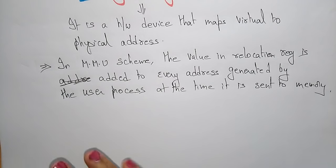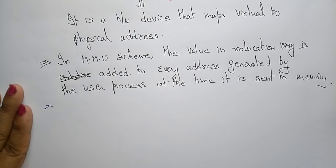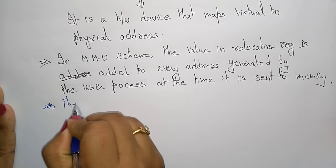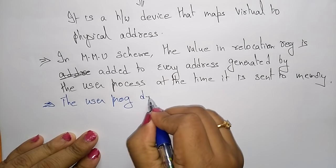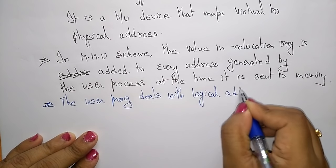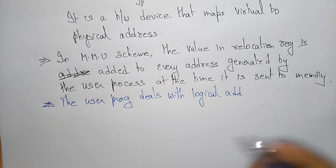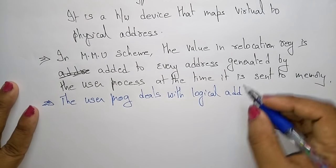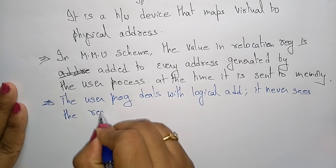The user program deals with logical addresses only — it never sees the real physical address. Whatever the user program consists of, it always deals with logical addresses, because the user doesn't know the actual physical location. In fact, the program size written by the user may be larger than the physical memory available.